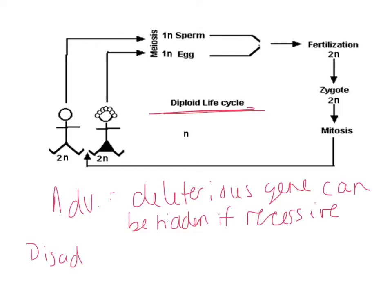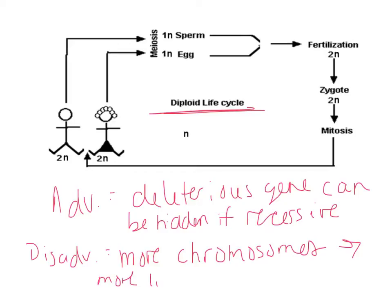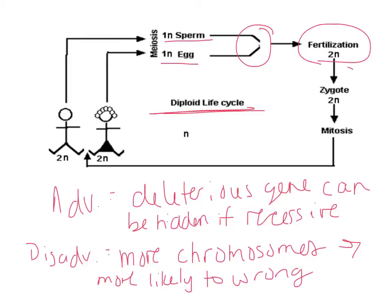Some of the disadvantages of having a diploid life cycle — where the cell has two sets of chromosomes — is that you're going to have more chromosomes, which can be a disadvantage. It can hide some damaging genes, but there's also a bigger chance for something to go wrong during division and separation of chromosomes, and more chances for mutations because there are simply more of them. In the diploid life cycle, diploid organisms go through meiosis to produce haploid cells, and those two haploid cells come together to form another diploid cell, which then goes through mitosis as the organism grows.